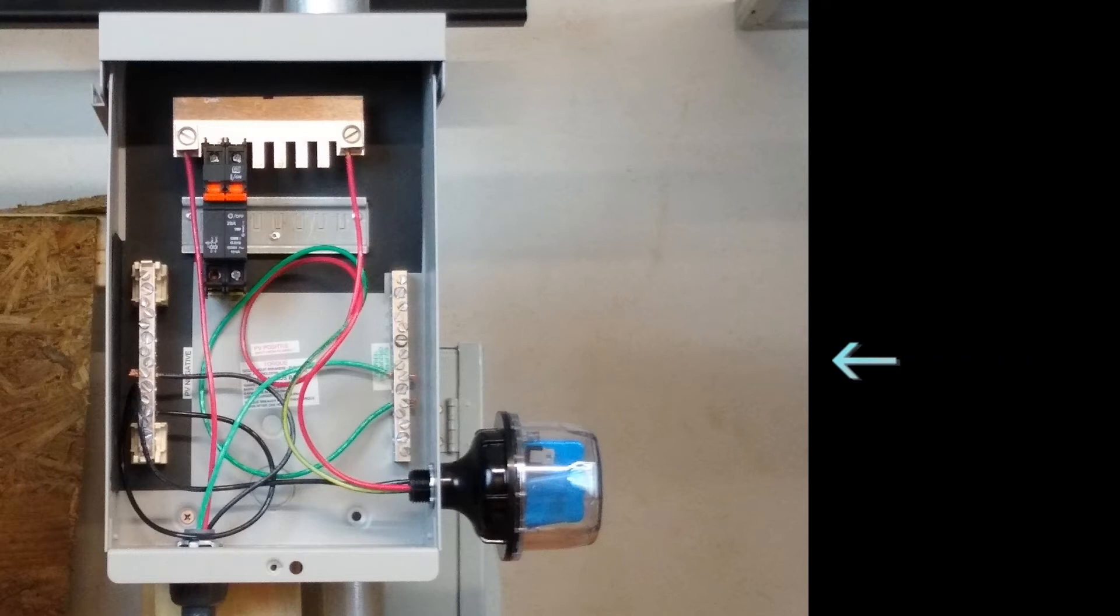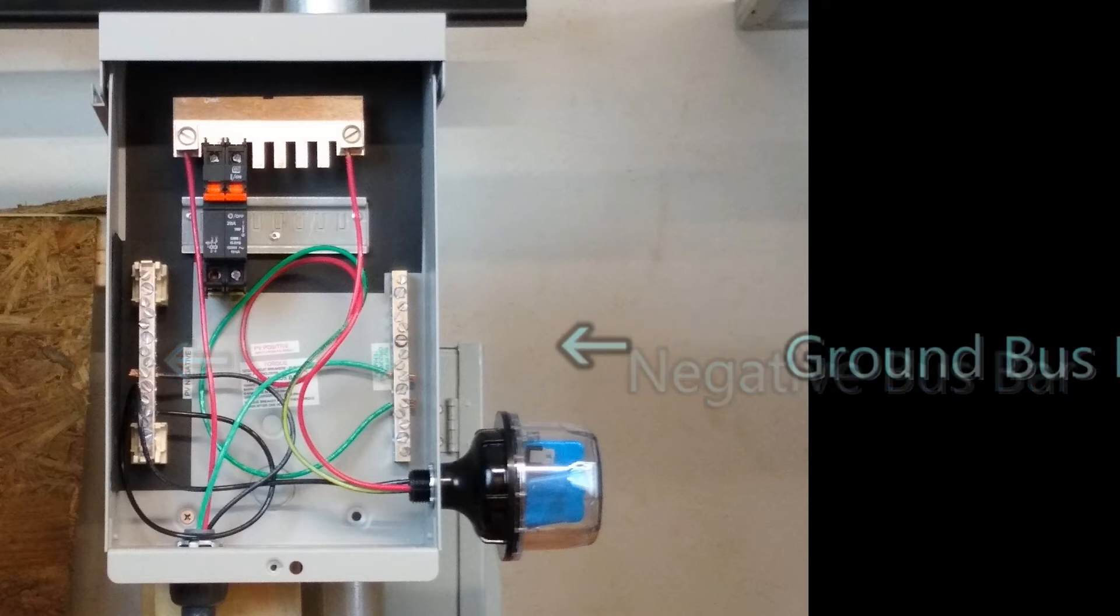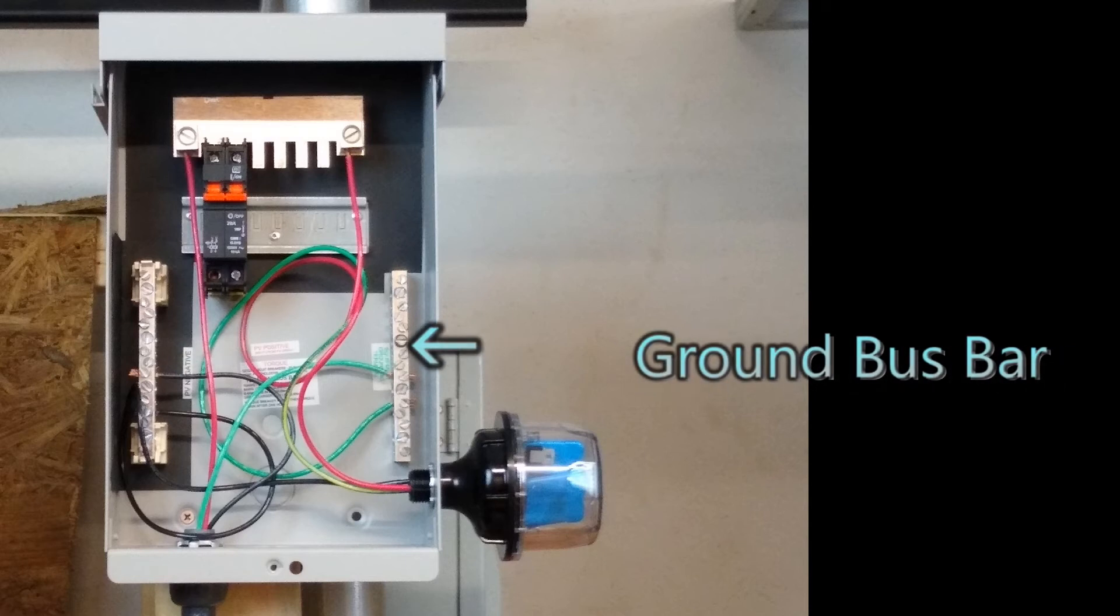Again, we have the negative bus bar. That's where you'll make your connections from the PV source circuits. That's coming from each of the strings of the array, as well as the PV output, which goes to the DC disconnect.